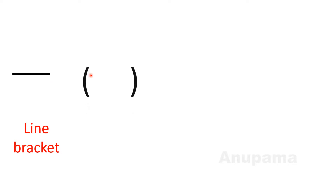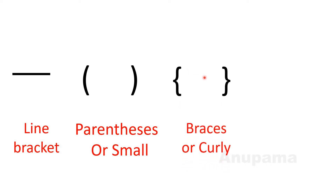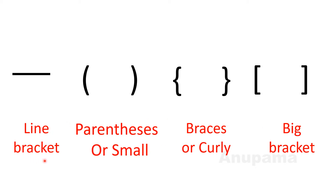There are four kinds of brackets. First, a line above the number called the line bracket. Second, small brackets or parentheses. Third, braces or curly brackets. Then big bracket. There is a sequence too: first solve the line bracket if it exists, then small or parentheses bracket, then curly or braces, and at last the big bracket.